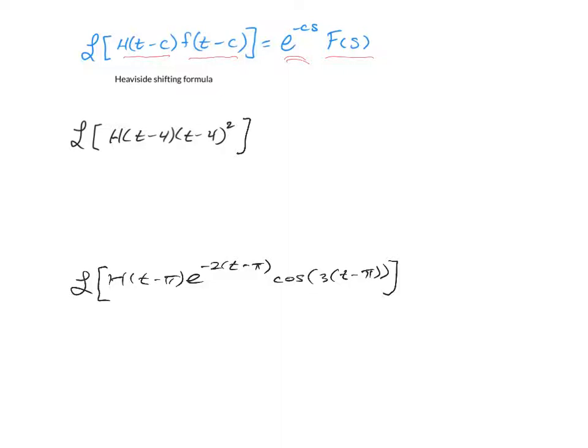For our first example, we're going to take the Laplace transform with the Heaviside at t minus 4 times t minus 4 squared. We're going to first capture the shifting part of this from the Heaviside as e to the negative 4 times s.